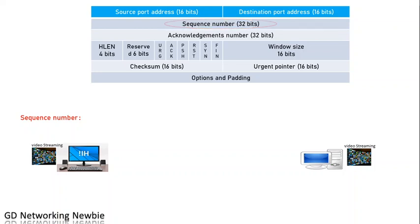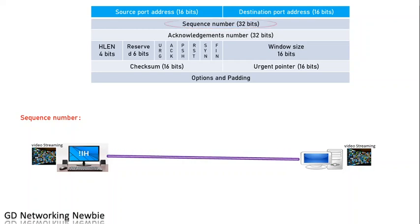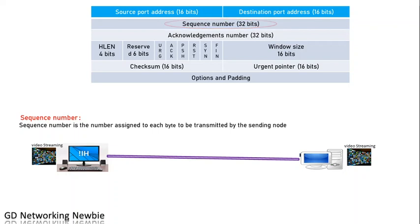Let's move to the next field of the TCP header — that is the sequence number. When we transmit data segments from one node to another, or from client to server, these data segments may arrive at the destination by following different paths. There may be multiple paths from source to destination, and if they follow different paths, they may arrive at different times. So we put a sequence number on each byte of the segment. When received at the destination, the destination should provide an acknowledgement. A sequence number is a number assigned to each byte to be transmitted by the sending node.